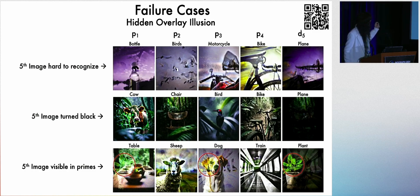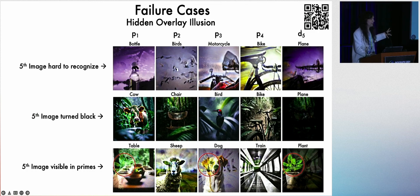But it doesn't always work. Failure cases for the hidden illusions, for example, include where you can see that hidden image inside the other four images. So the target here was to create a plant when we overlay these four images on top of each other. But it turns out we can see the plant inside of the dog and on the table here, which we're not supposed to see. It doesn't work all the time. But it works well enough to create a bunch of them.